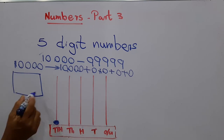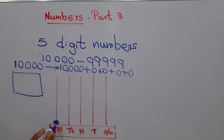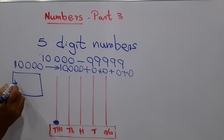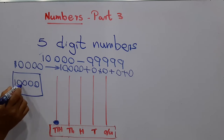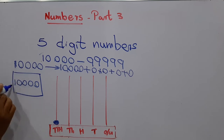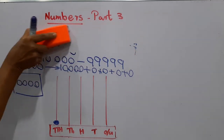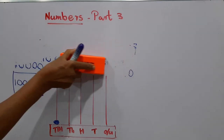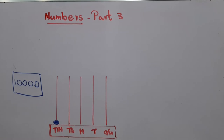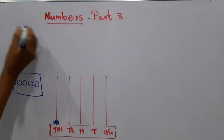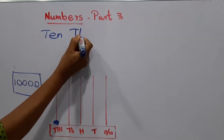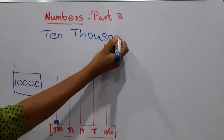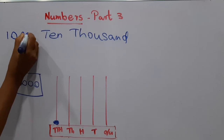We are going to write the number represented on this abacus. How many ten thousands? One. Thousands, hundreds, tens, and ones — all zero. This number is ten thousand. Now ten thousand is represented on this abacus. How do we write the number name? Ten thousand.